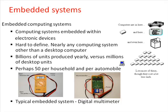Typically, an embedded system, when compared with other devices, consumes low power, is small in size, rugged in operating range, and cheaper in cost. For example, a digital multimeter as shown is a typical embedded system.